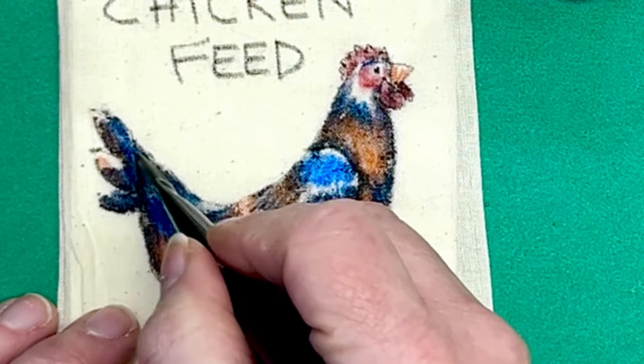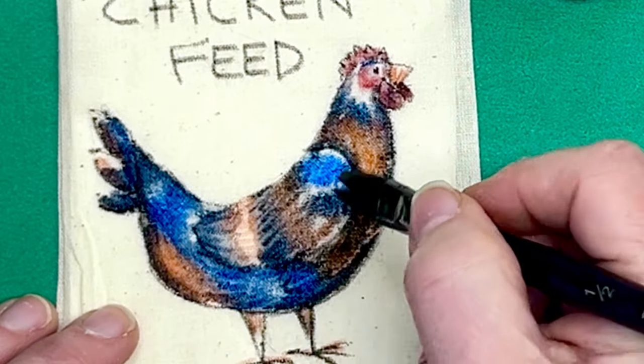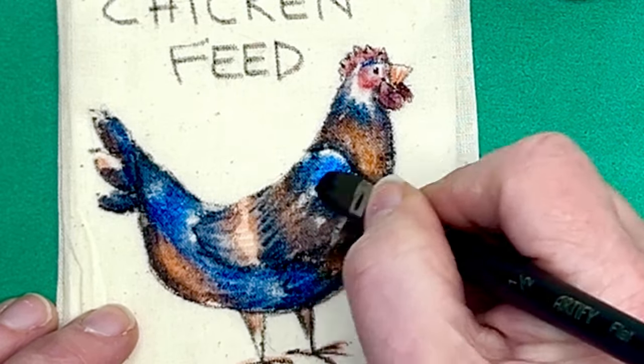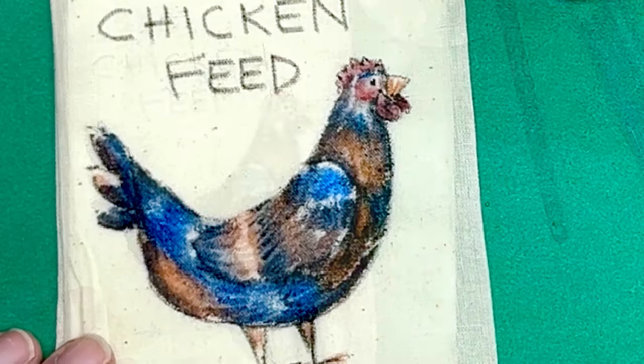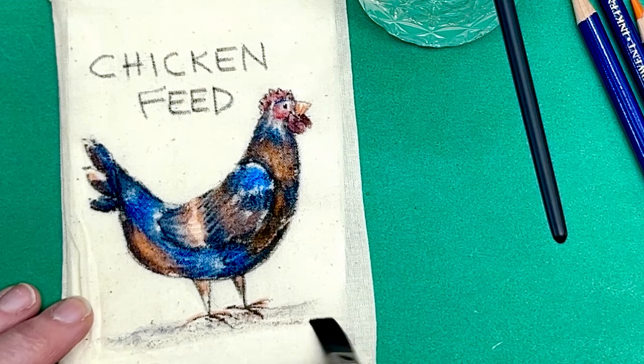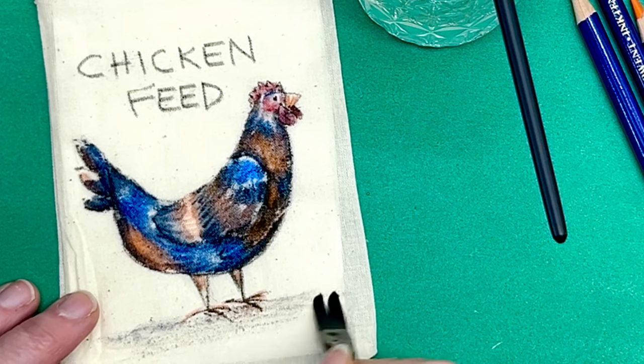Now I've got this kind of darker color on my brush. You know, I've picked up some of that color. So I'm going to go ahead and just put it on the ground underneath of this fun little chicken.